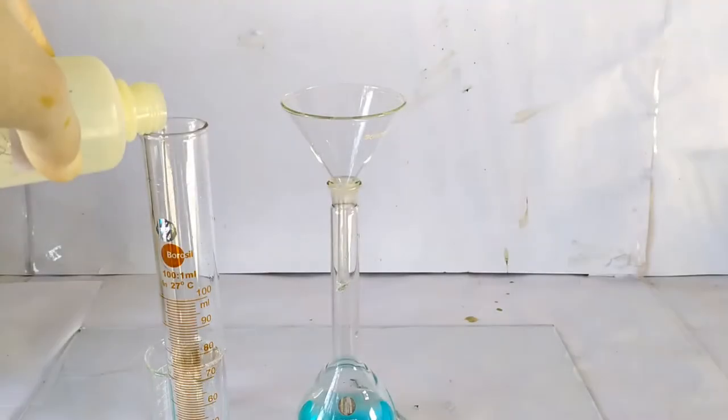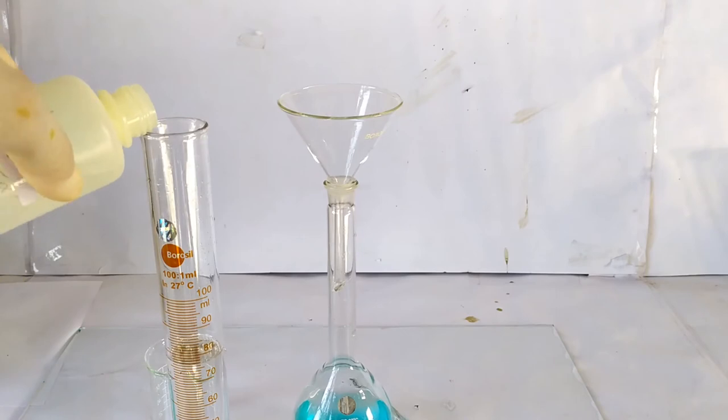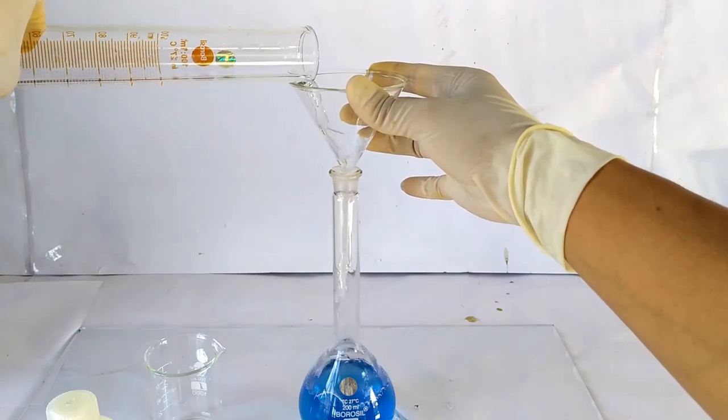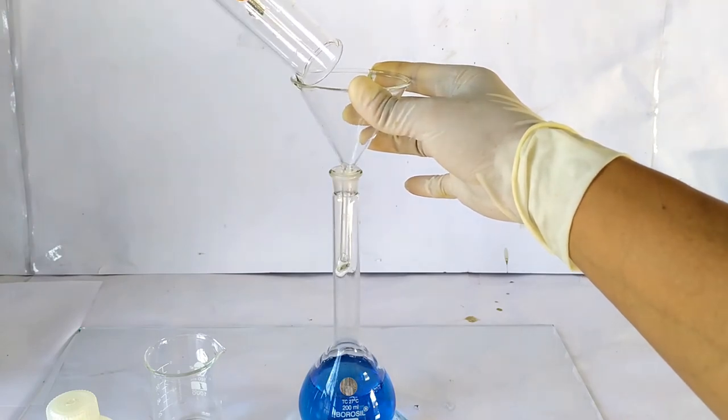Now measure 75 ml of 2 molar sodium hydroxide using a 100 ml graduated cylinder and transfer it into the volumetric flask or the 250 ml cylinder.